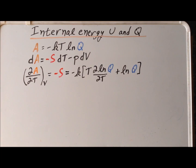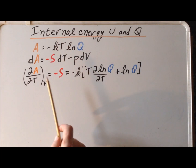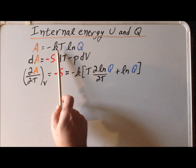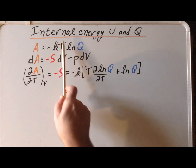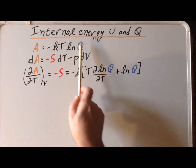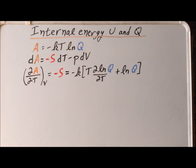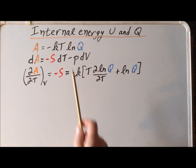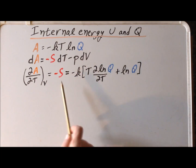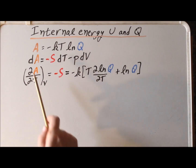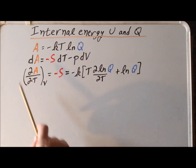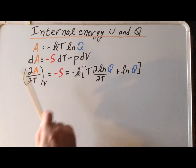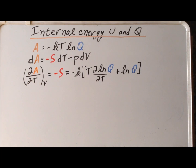We've used the product rule, where we have two functions: the first function being the temperature, and the second being the natural log of Q. So we've used the product rule to find the derivative of A with respect to the temperature at constant volume.